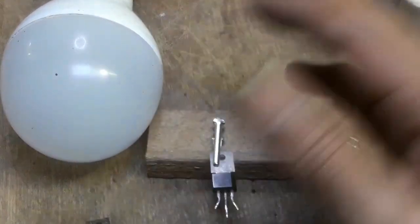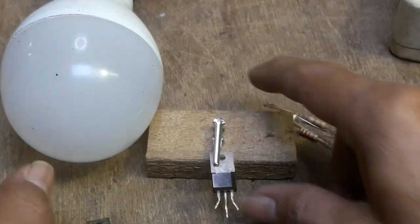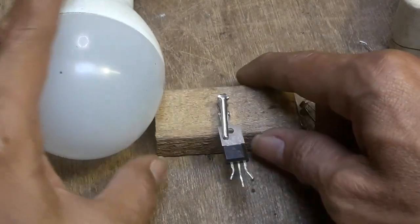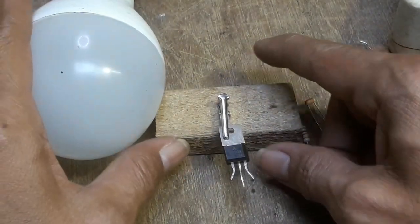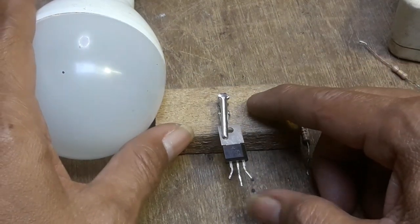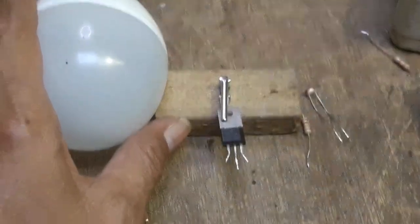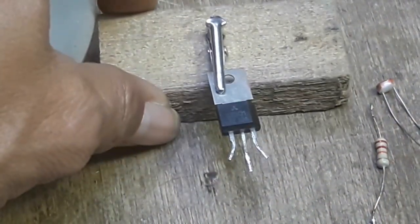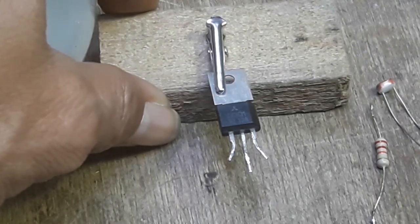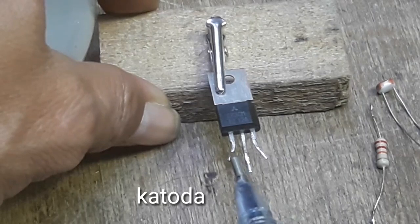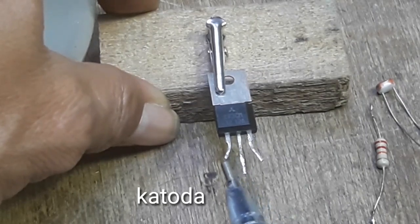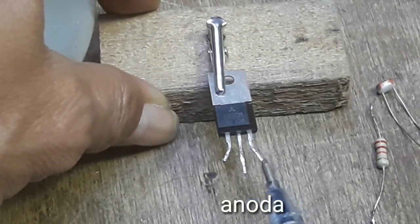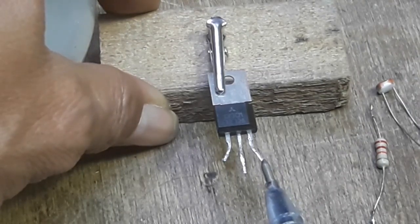Caranya, kita harus tahu jenis SCR. Kalau gak tahu jenis SCR, gak bakalan bisa nyala, gak bakalan bisa otomatis. Jadi kita harus tahu mana pin SCR tersebut. Satu, mempunyai tiga pin. Posisi ini adalah katoda. Posisi tengah adalah anoda. Sedangkan posisi pinggir sini adalah gate atau gerbang.